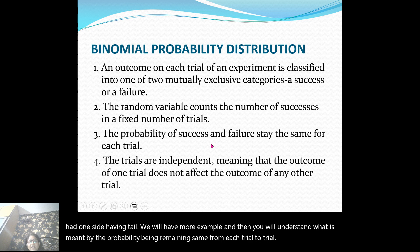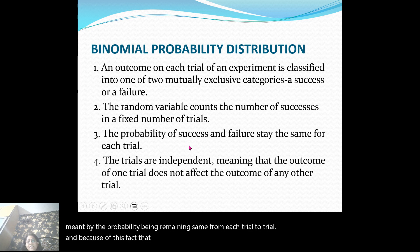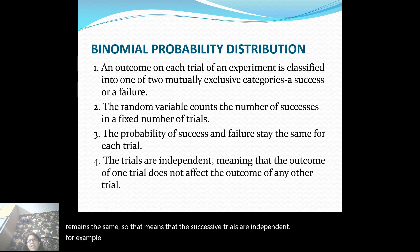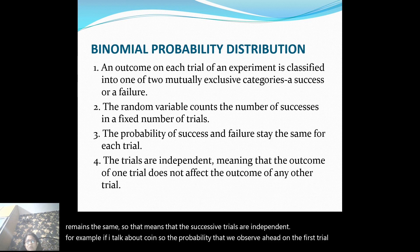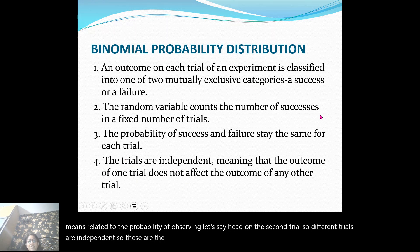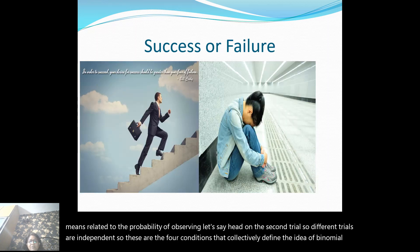Because the probability of success remains the same and the sample space stays the same, successive trials are independent. For example with a coin, the probability of observing a head on the first trial is by no means related to the probability of observing a head on the second trial — different trials are independent. These are the four conditions that collectively define the binomial probability distribution.